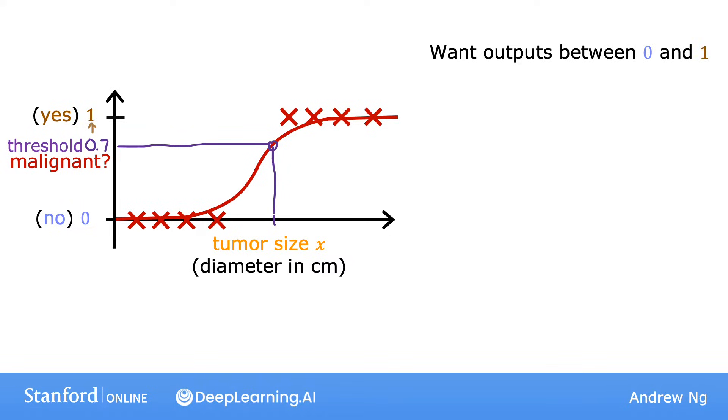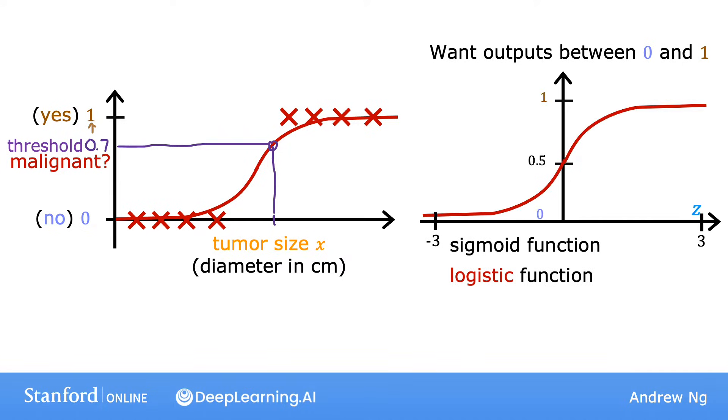To build up to the logistic regression algorithm, there's an important mathematical function I'd like to describe which is called the sigmoid function, sometimes also referred to as the logistic function.